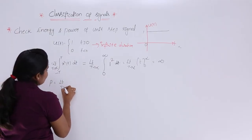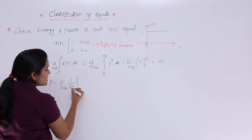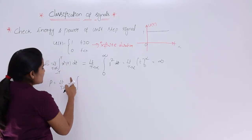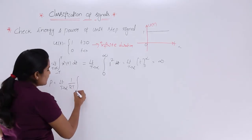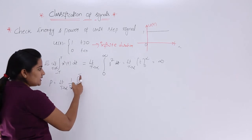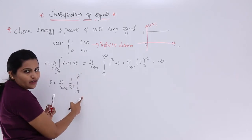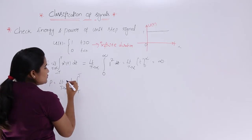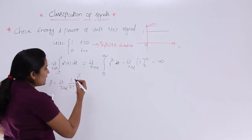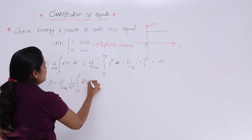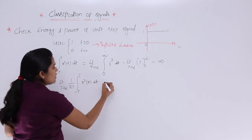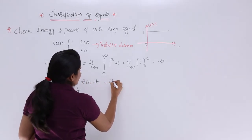For the power calculation we use the infinite power formula: P = limit as T → ∞ of (1/2T) times the integral from −T to T of x²(t) dt. This is the standard formula to calculate the average power of an infinite duration signal.